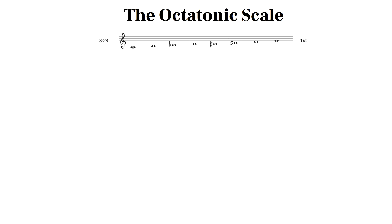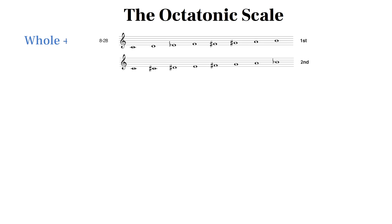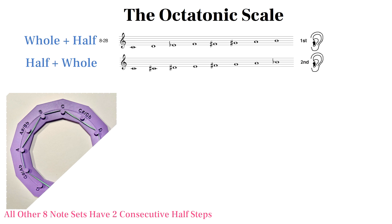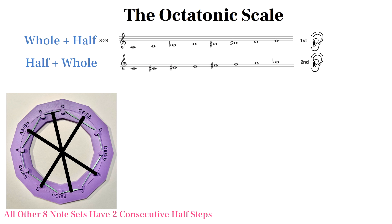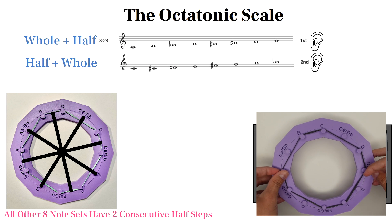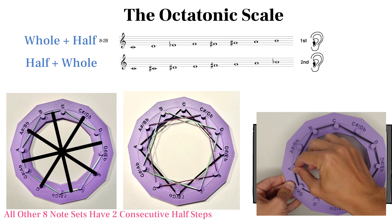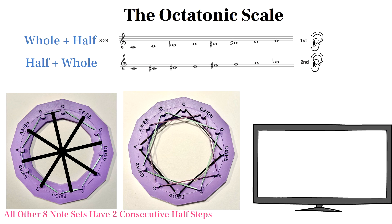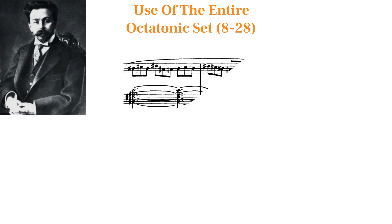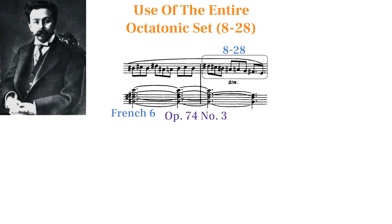The octatonic scale has two modes: a repeating pattern of a whole step then half step, or half step then whole step. It's the most even and symmetrical 8-note set. It can only be transposed to 3 unique places, mapping onto itself at the level of a minor third. It can be thought of as two diminished chords next to each other, with a third diminished chord being the only pitches not included. Scriabin based a lot of his harmony off of subsets of the octatonic scale and sometimes used the entire scale, such as in Opus 74 number 3.